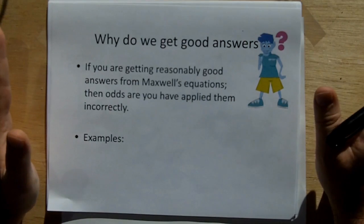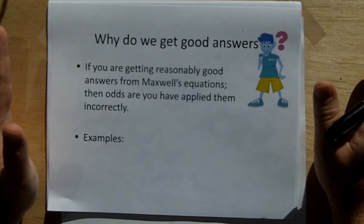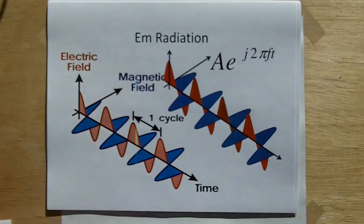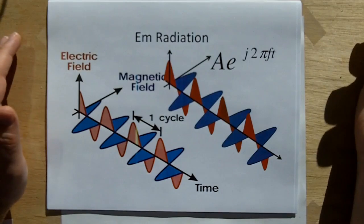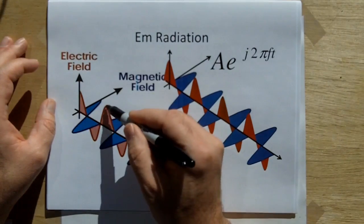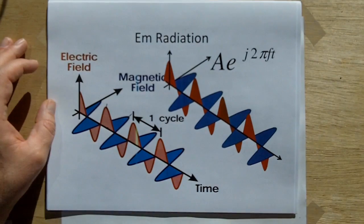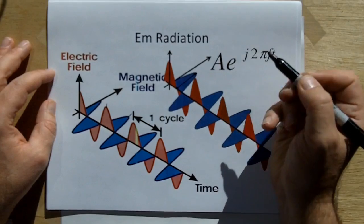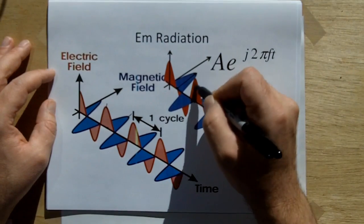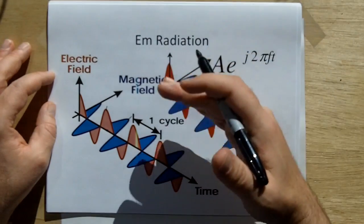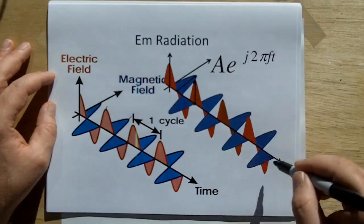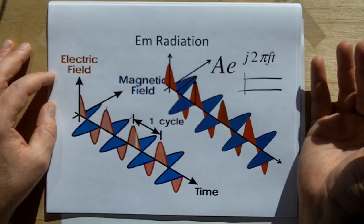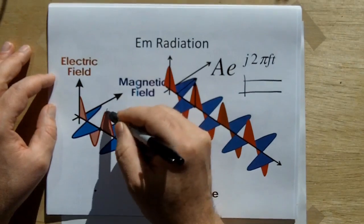So one thing we have to learn is that very few people actually know how to use Maxwell's equations properly. And I'm telling you right now that if you're getting reasonably good answers from Maxwell's equations, you've probably applied them incorrectly. And I have lots of examples. For example, electromagnetic radiation. For Maxwell's equation, when you do the derivation of the plane wave equation, the electric and magnetic fields are in phase. In other words, this peak and this peak occur at the same point in time and space. But the actual model that engineers use is in quadrature.